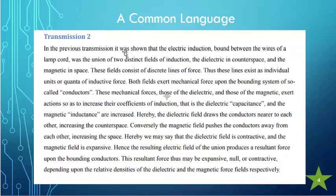This is from transmission 2 from that paper. In the previous transmission, it was shown that the electric induction bound between the wires of the lamp cord was the union of two distinct fields of induction, the dielectric in counter space and the magnetic in space. These two fields consist of discrete lines of force. Thus, these lines exist as individual units or quanta of inductive force.